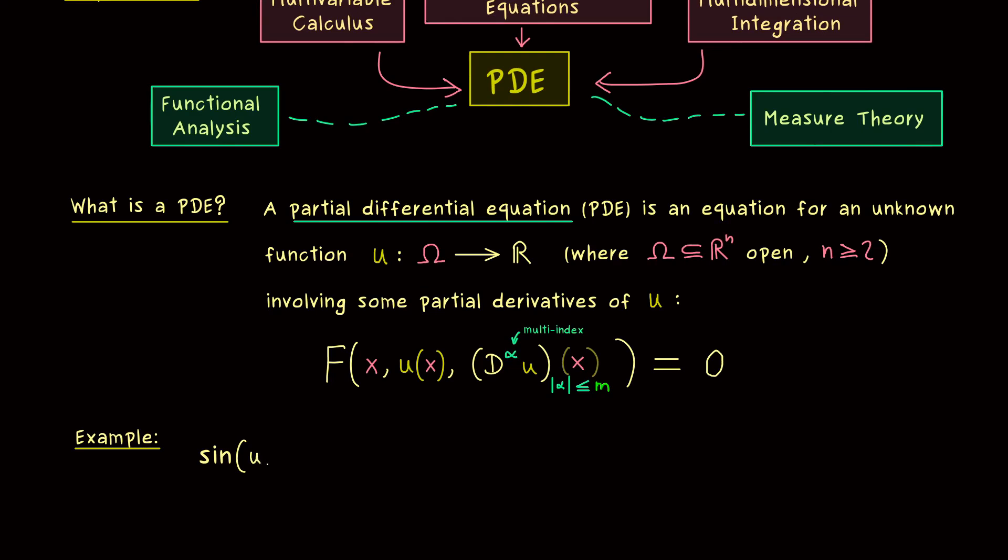So for example we could say we have the sine function where u of x goes in, and then maybe we add the first partial derivative of u with respect to x_1. And then maybe we multiply this with the second order partial derivative of u. And this one should be with respect to x_1 and x_2.